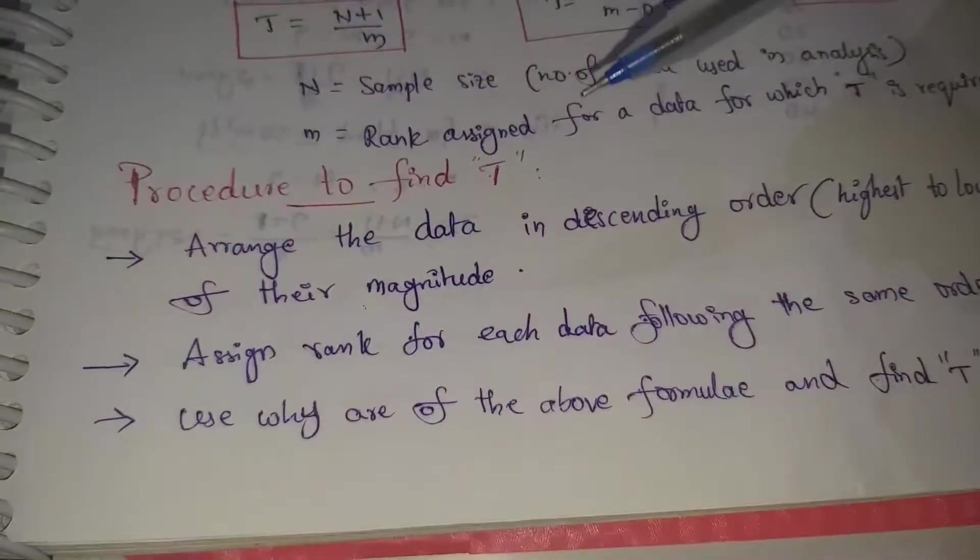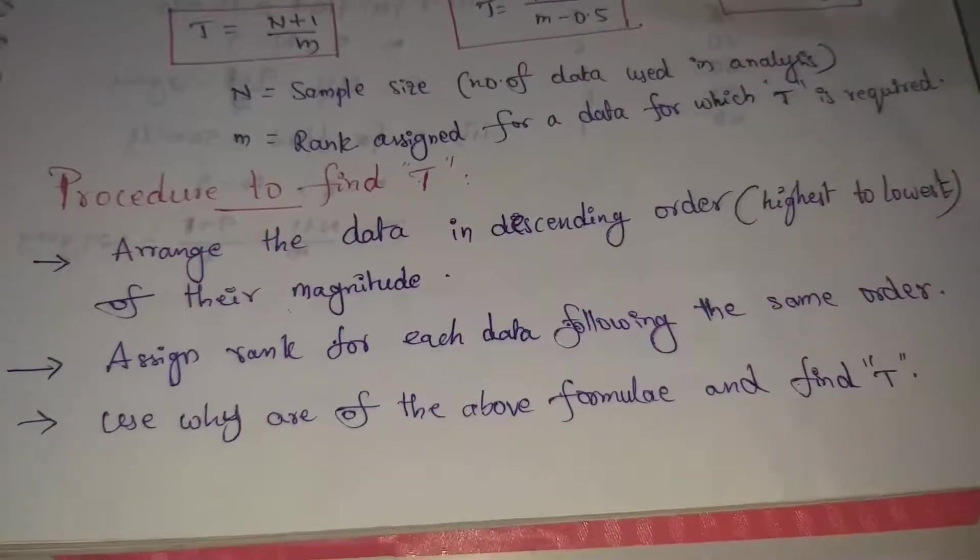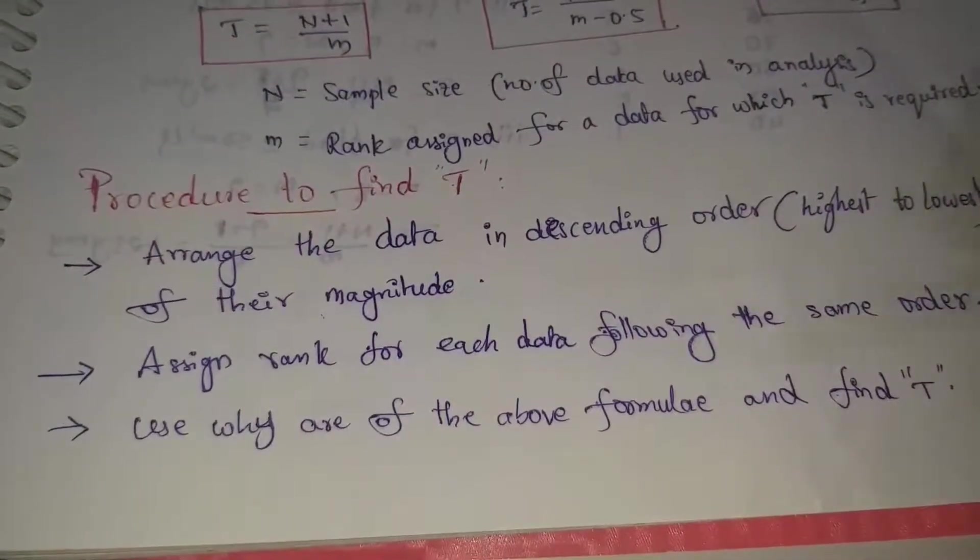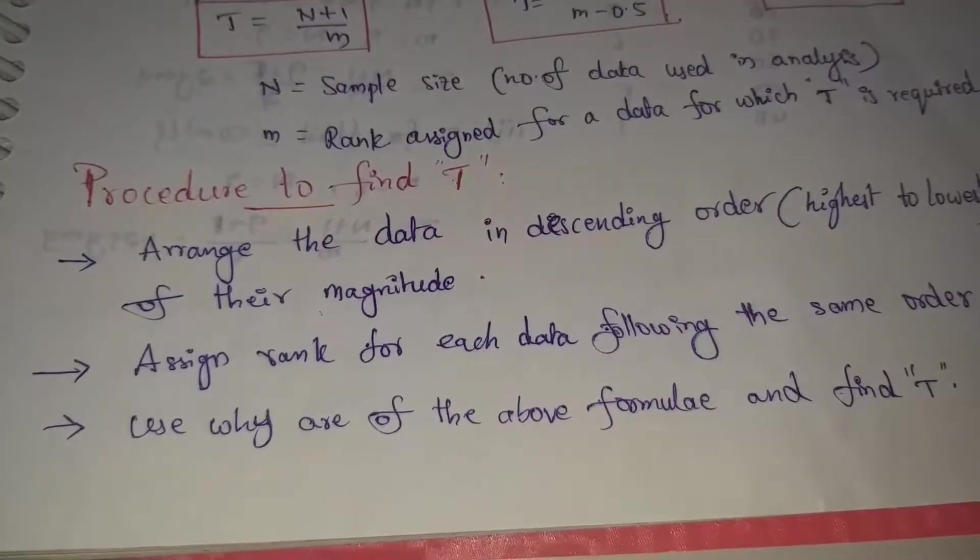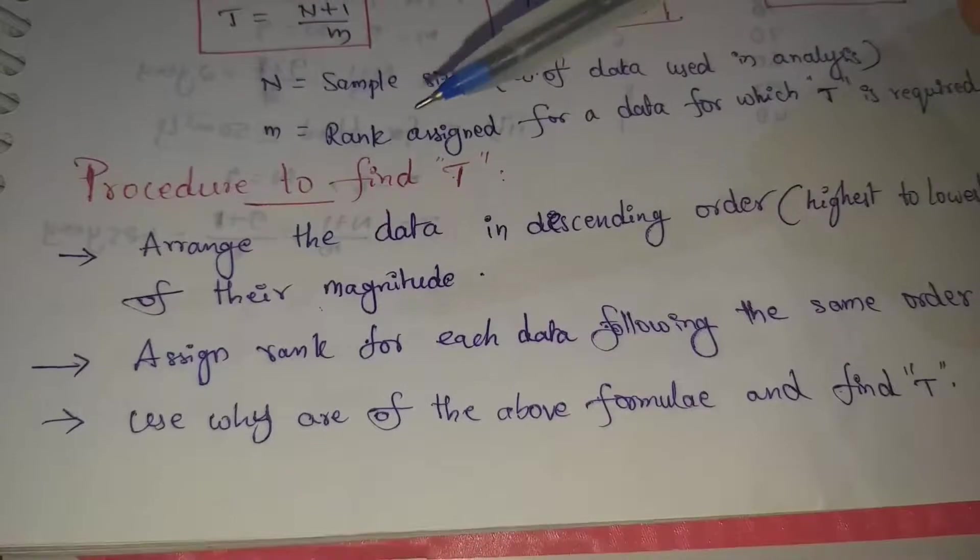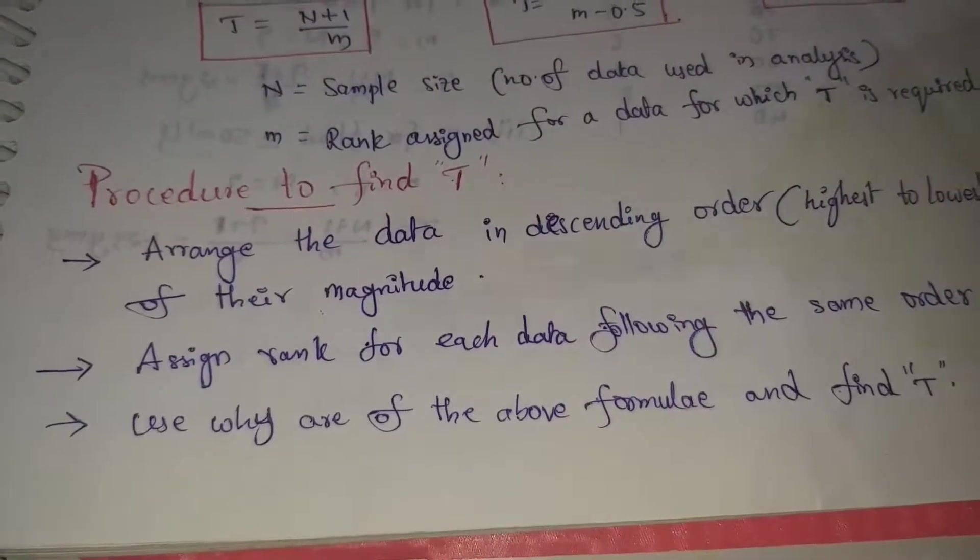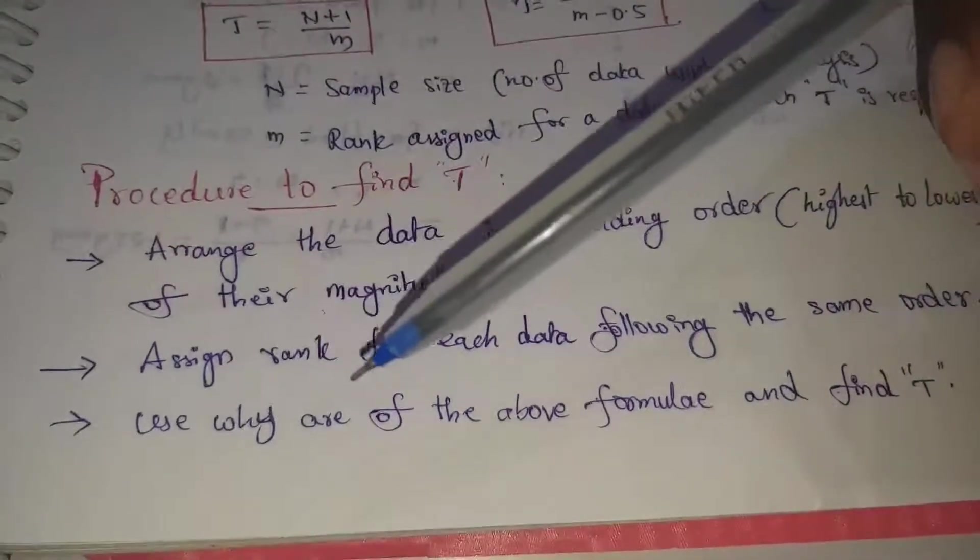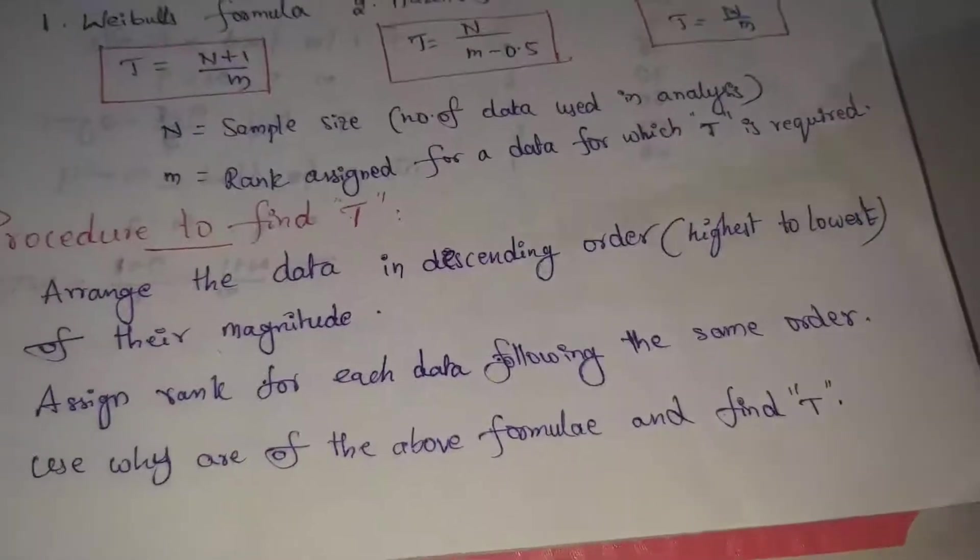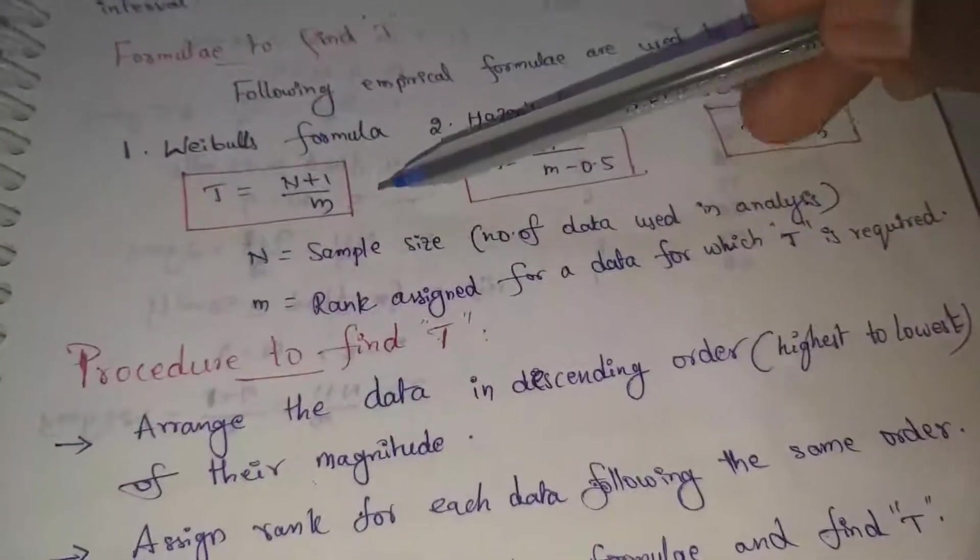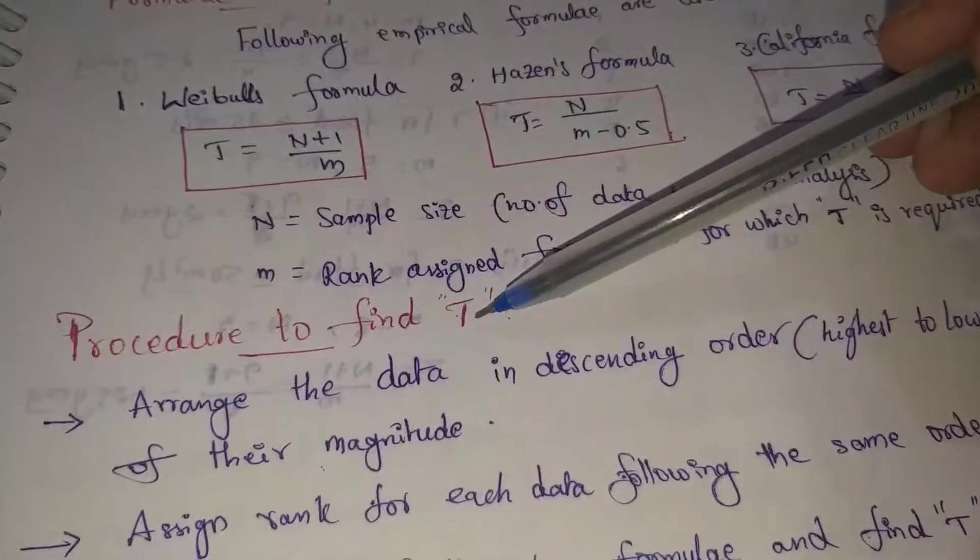Second point: assign rank for each data following the same order. Third point: use any of the above formula and find T. T means frequency.